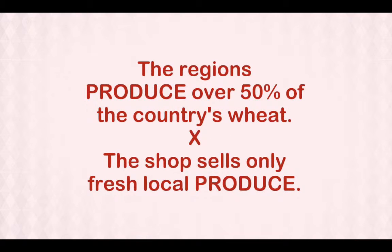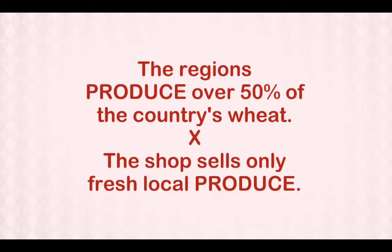Of course, you know that this verb means to manufacture and that you should pronounce it produce. But did you know that you could also use this word as a noun? It refers to fruits and vegetables that have been grown. It's about organic farming. The verb is pronounced produce and the noun is produce.